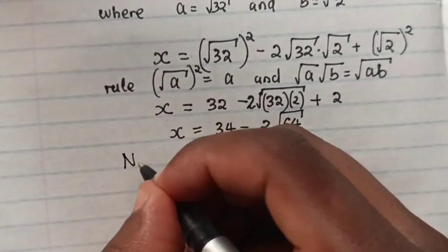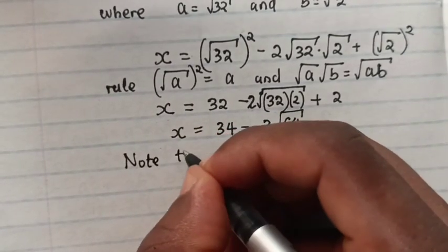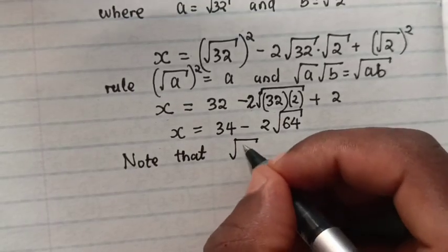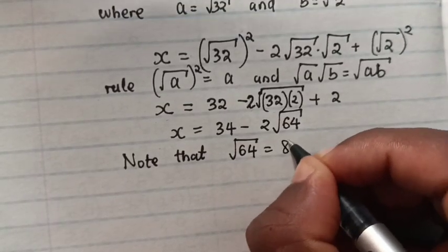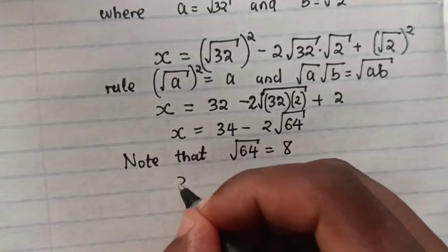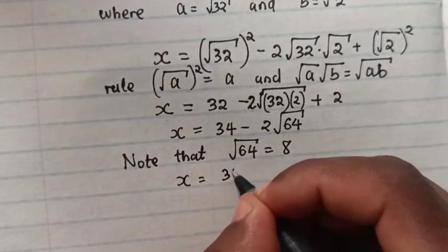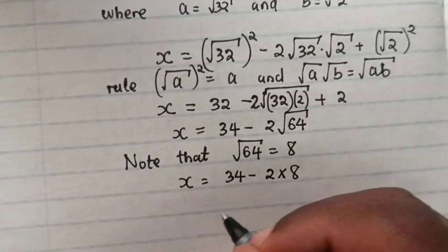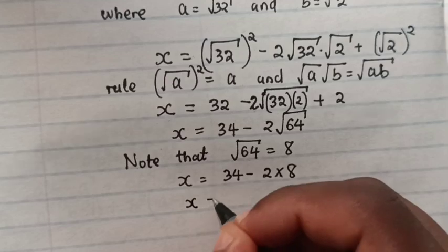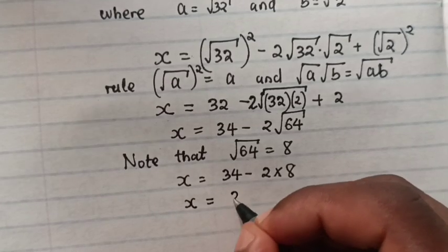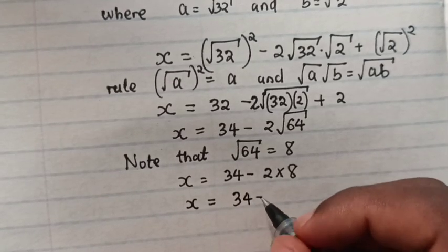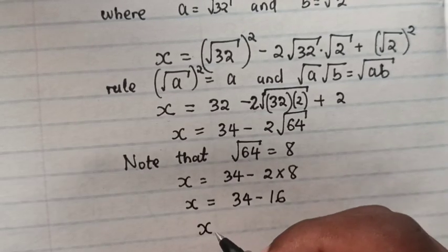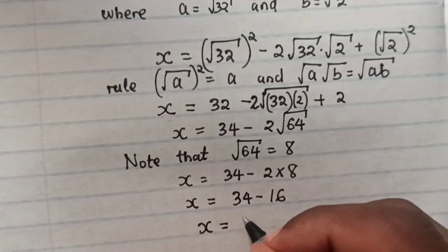Then x will be equal to 34 minus 2 times 8. So x will be equal to 34 minus 16. 34 minus 16 is equal to 18.